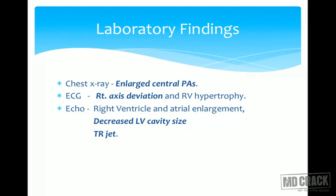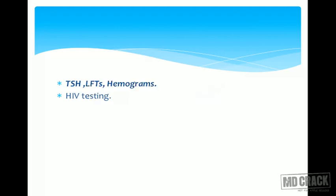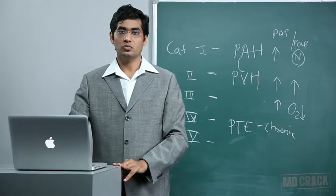By measuring the TR jet velocity in 2D echo, we can calculate pulmonary artery pressure — so TR jet is very important in quantifying pulmonary hypertension. If you suspect obstructive disease like COPD, prescribe pulmonary function tests (PFTs). If you suspect restrictive disease like ILD, prescribe HRCT.